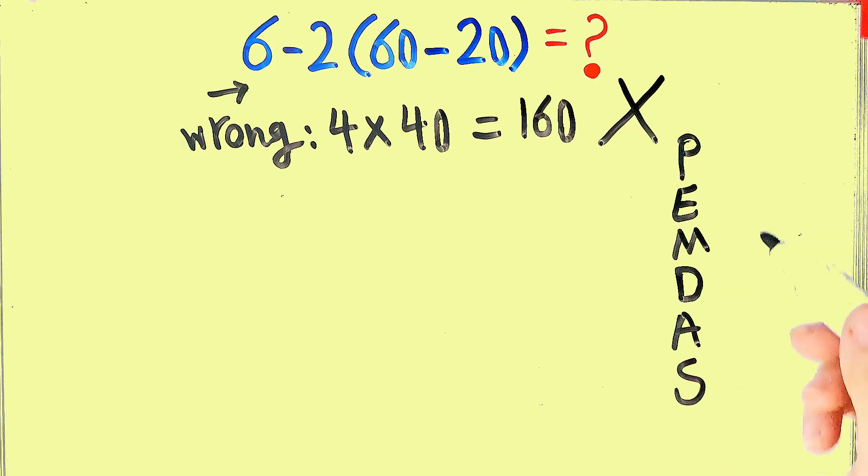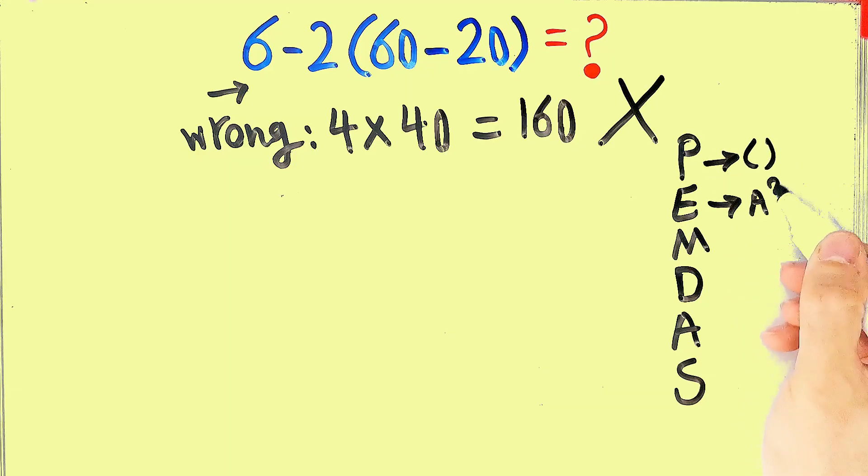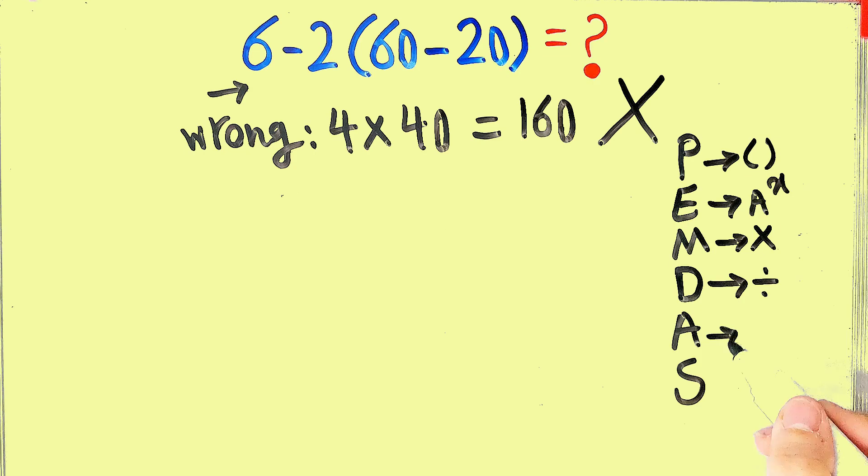Okay guys, in this rule, P stands for parentheses. E stands for exponent. M stands for multiplication. D stands for division. A stands for addition and S stands for subtraction.